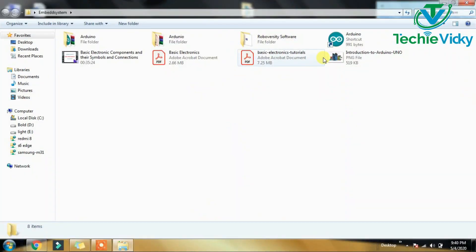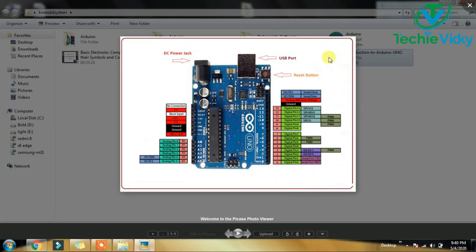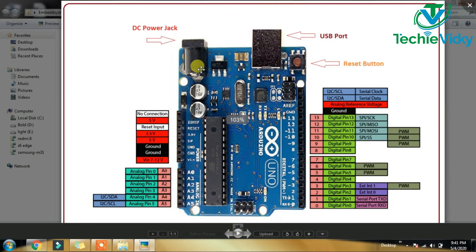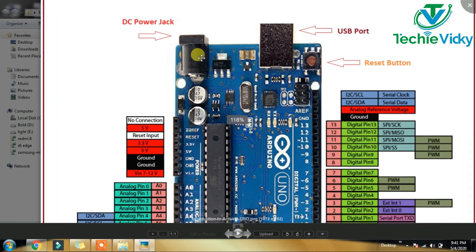First, let me tell you what I have on the Arduino board. This is the DC power jacket. This is the power supply. This is the USB port.